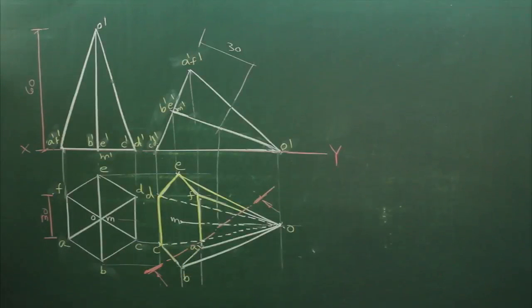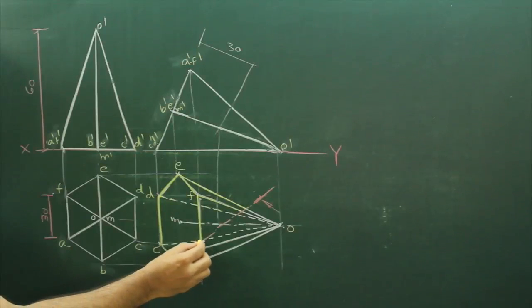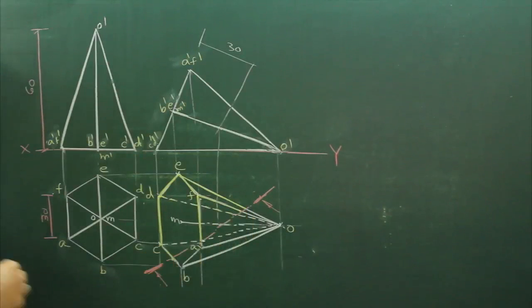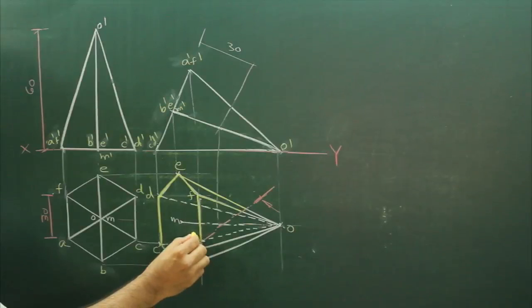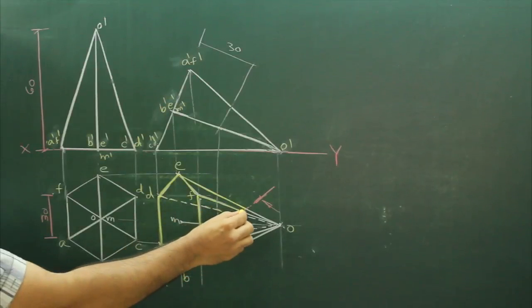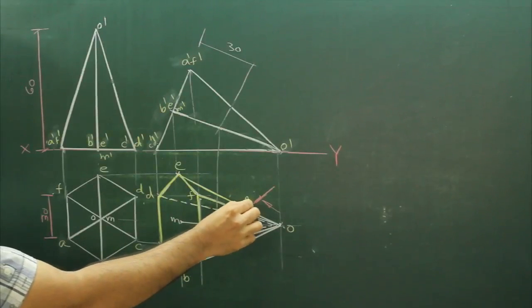Now we will see how many points we got. We got one point, second point, third point, fourth, fifth and sixth. Now we will name them. This is PU, this is PV, as well as PC. This part O'C. This part is PD. This is PF and this is PE.